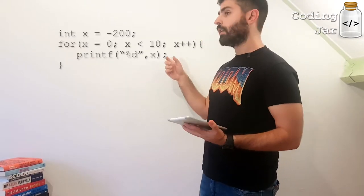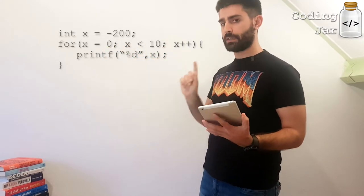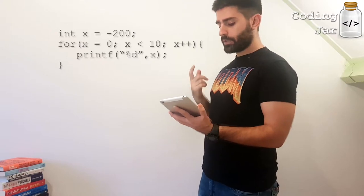This will print the numbers from 0, including 0, to 9, including 9, but not 10. So how does that work?